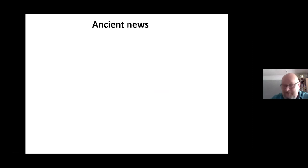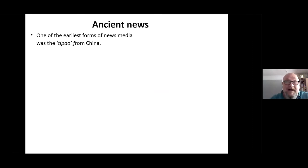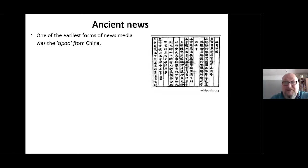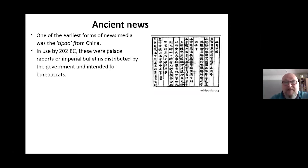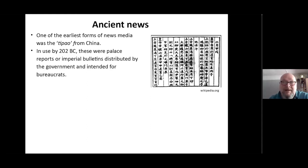Look straight away at the very early ancient newspapers. The earliest one was in China — Tipao, I think that's how you pronounce it — and they were in use by 202 BC, so really early. They were basically palace reports or imperial bulletins, intended for diplomats, so they didn't get a massive general circulation, but they were around government people.